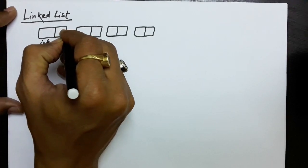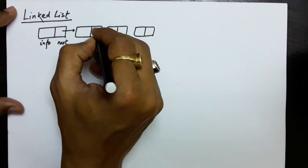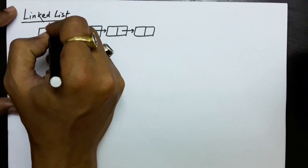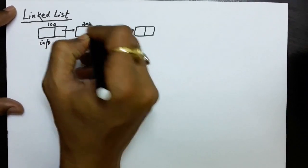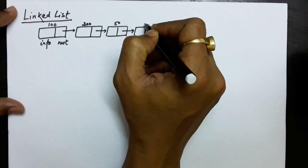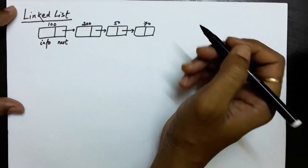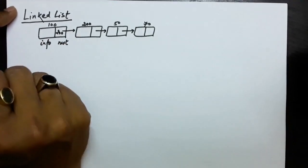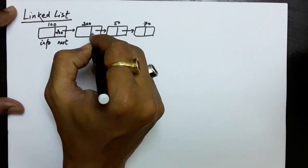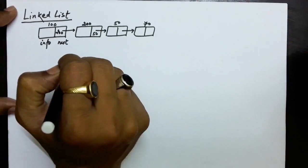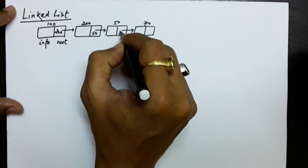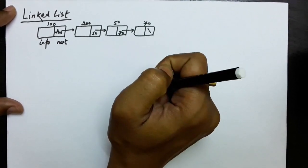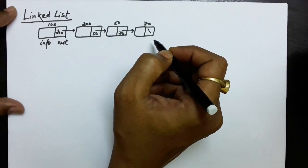So if this is the linked list, this node will keep the address of the next node. Let's say the address of the first node is 100, address of the next node is 200, address of this node is 50, and address of this node is 70. So this node will contain the address of the next node, which is 200. This node will keep address 50, and this node will contain 70. Since there is no node after this, it will contain null. The slash is the indication that this is null.